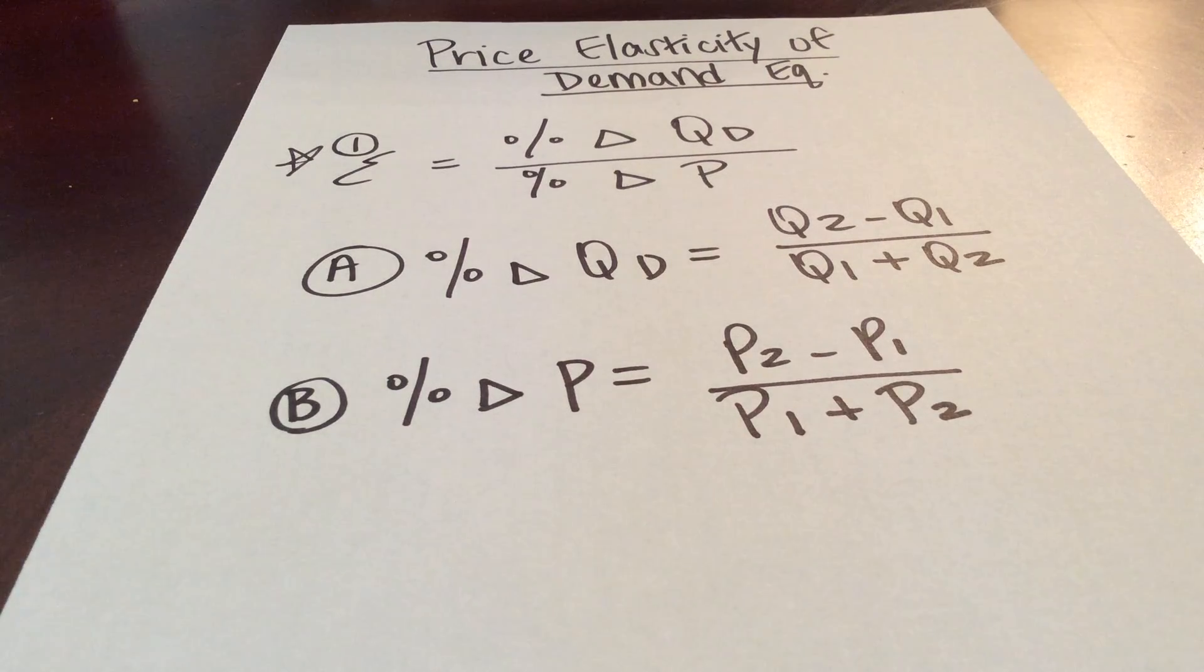I think the best way to do this is to break it down and to work the top part of the equation separately from the bottom, and then once you have an answer for A and for B, we'll then bring them back together.